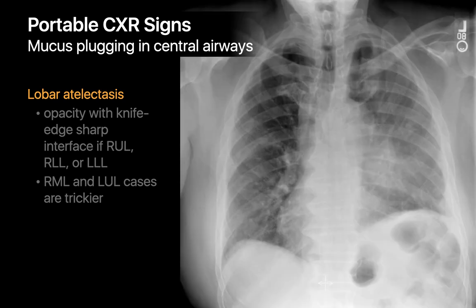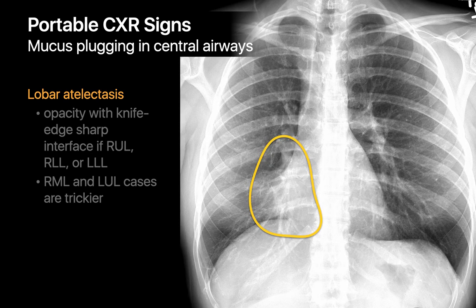Obstructive left upper lobar atelectasis is trickier to pick up on a portable chest x-ray. The imaging features are an acute decrease in left lung volume and homogeneous apparent increased opacification of the entire lung. Obstructive right middle lobar atelectasis is also sometimes trickier, since it can be very tough to distinguish from a right middle lobe consolidative pneumonia.